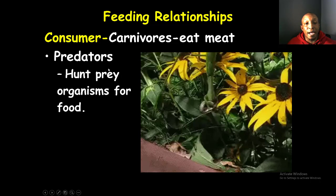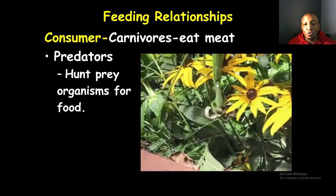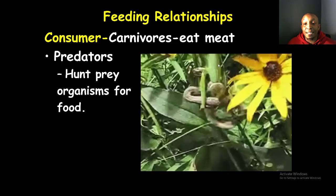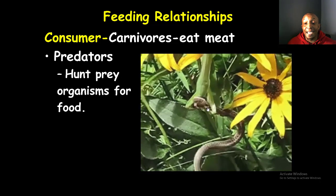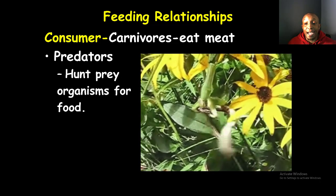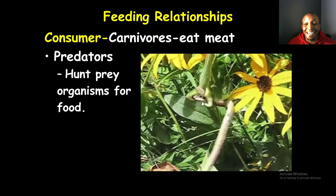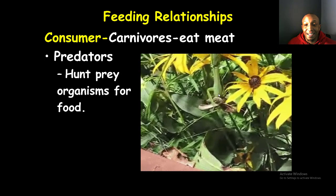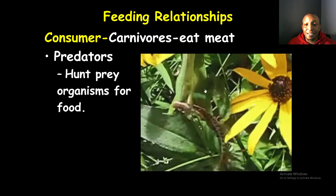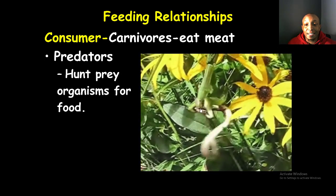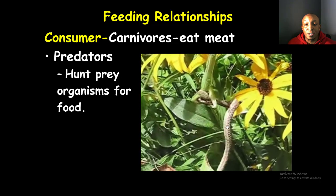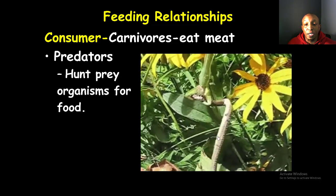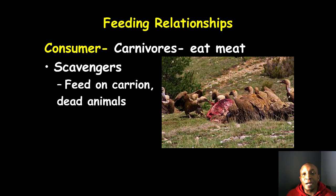Carnivores eat meat or other organisms — these are your predators that hunt prey for food. In this video, you can see a praying mantis that has caught a snake and is actually eating it as the video progresses. This large praying mantis is preying on the snake and consuming it to obtain its nutrients and energy.